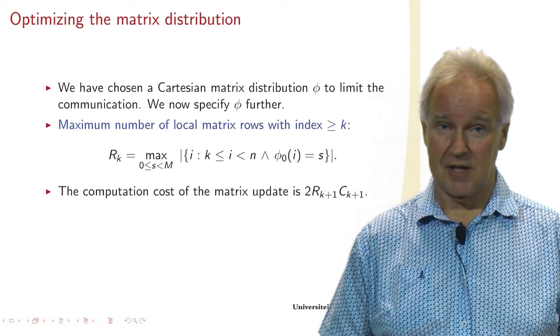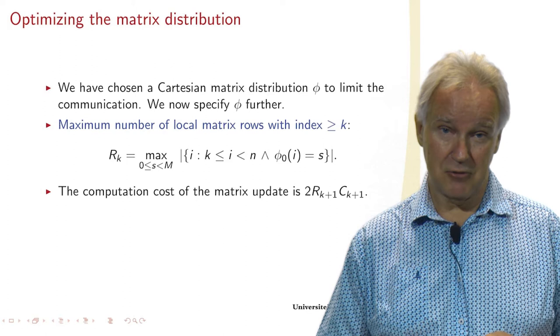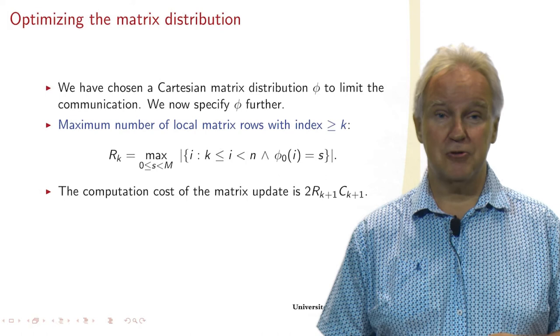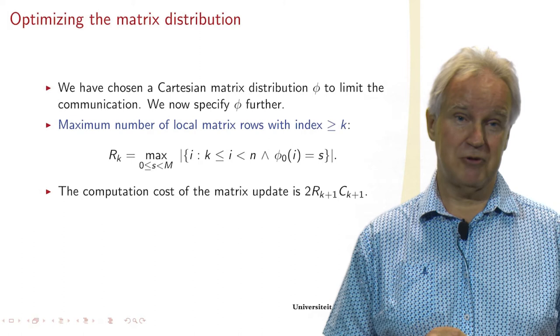If we are in stage K, we have to update all elements larger than K, meaning larger than or equal to K plus 1. And for all those elements, we have to do that for the elements in my row and my column. So the processor that has most rows has R_{K+1} rows, and if it has most columns, then it has C_{K+1} columns.